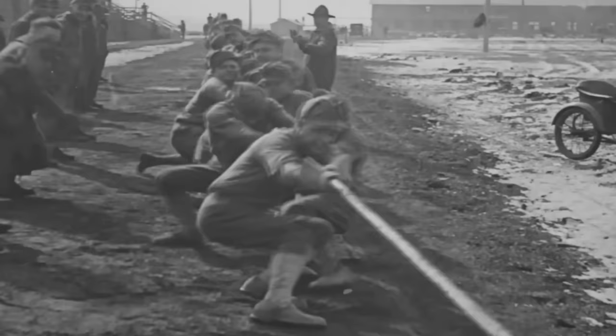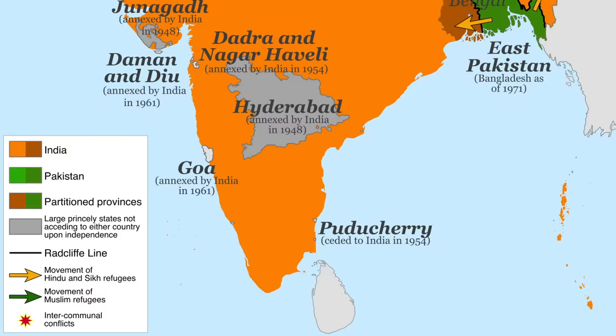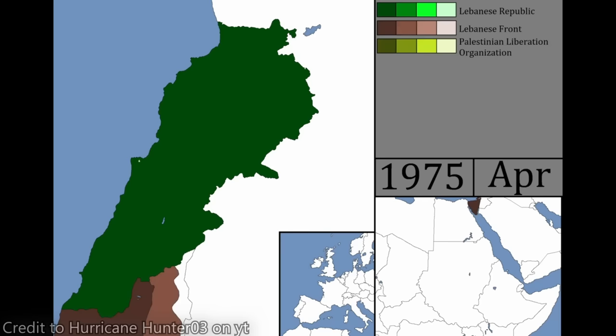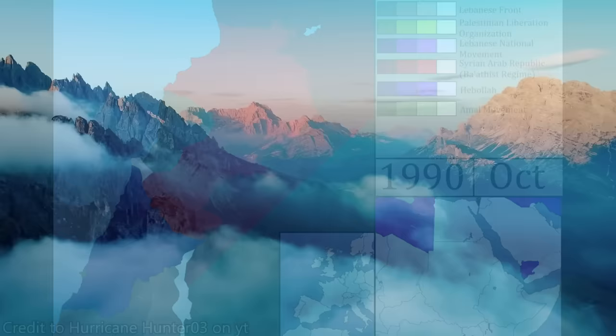History is a weird thing. Everyone thinks they're a historian because they have some conception of what happened in the past — either the stories their family told them, what they learned in high school, or what YouTube historians say in their goofy videos. But I studied history at college, and I'll tell you that it gets real complicated, real difficult, and really, really dark. Let's look at how to weave a complex tale of intricate causes, effects, trends, and interesting characters, all without getting overwhelmed and causing an information overload.